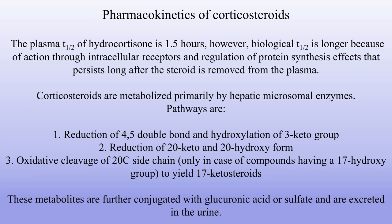Pharmacokinetics of corticosteroids. The plasma half-life of hydrocortisone is 1.5 hours. However, biological half-life is longer because of action through intracellular receptors and regulation of protein synthesis — effects that persist long after the steroid is removed from plasma. Corticosteroids are metabolized primarily by hepatic microsomal enzymes. Pathways include: reduction of 4-5 double bond and hydroxylation of 3-keto group; reduction of 20-keto to 20-hydroxy form; and oxidative cleavage of the 20-carbon side chain only in compounds having a 17-hydroxy group to yield 17-ketosteroids. These metabolites are further conjugated with glucuronic acid or sulfate and are excreted in the urine.